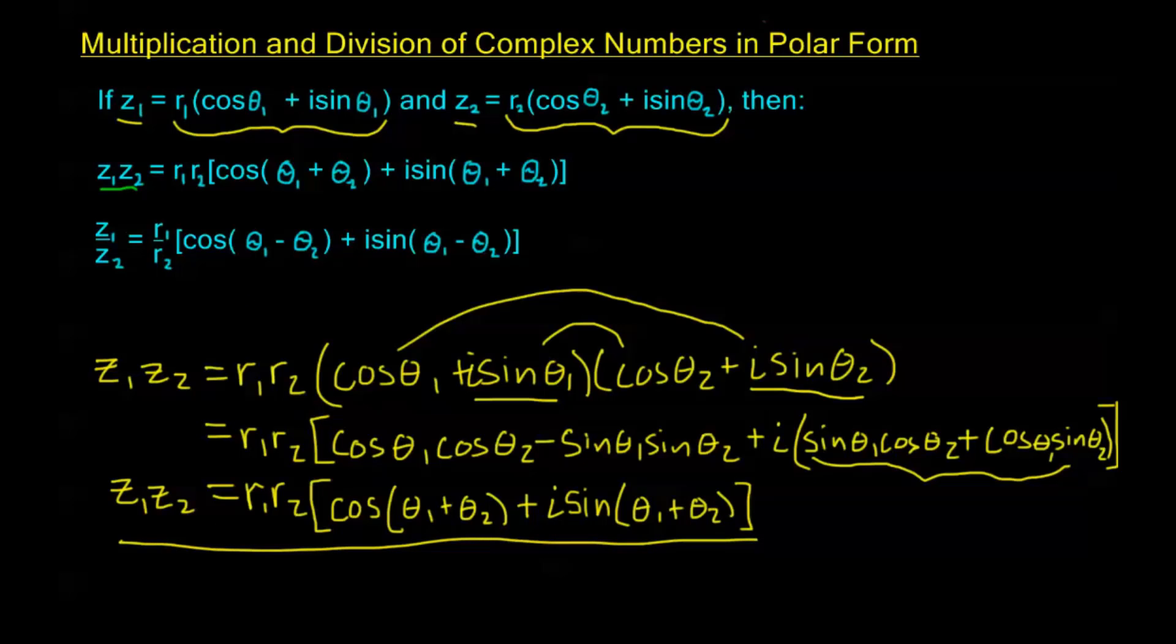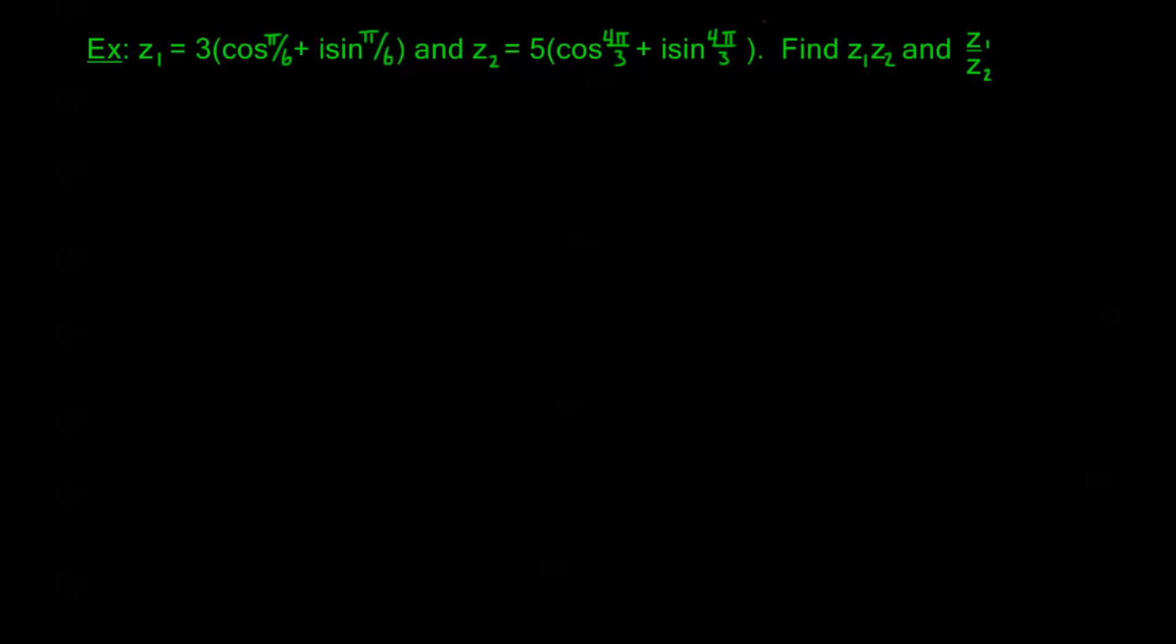Let's look at an example. Say I have Z₁ = 3(cos π/6 + i sin π/6) and Z₂ = 5(cos 4π/3 + i sin 4π/3). I want to find the product Z₁Z₂ and the quotient Z₁/Z₂.